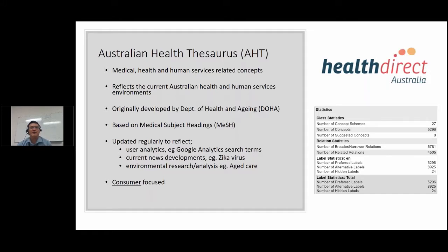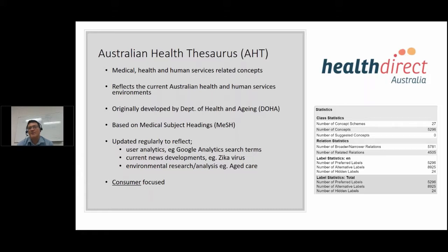I'm here to talk about the Australian Health Thesaurus, which we manage. It's a thesaurus of medical, health and human services-related concepts — human services because we manage the aged care and carer websites. It reflects the current Australian health and human services environment. We have over 5,000 concepts within our thesaurus. It was originally developed by the Department of Health and Ageing many years ago and we inherited it about four or five years ago. The thesaurus is based on MeSH — the Medical Subject Headings — maintained by the US Library of Medicine. We regularly update it using user analytics, current news developments such as the Zika virus outbreak, and environmental analysis of domain areas such as aged care. The main thing about the thesaurus is that it's consumer-focused, not aimed at clinicians.